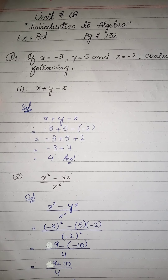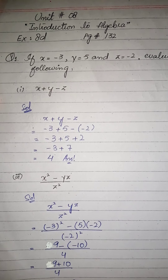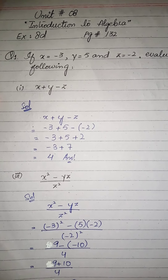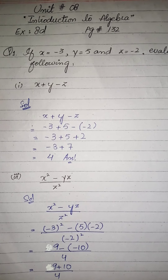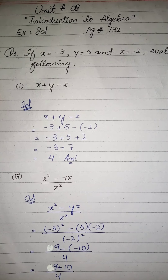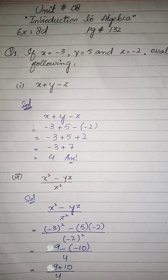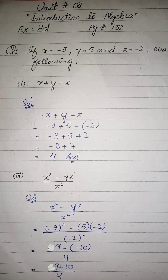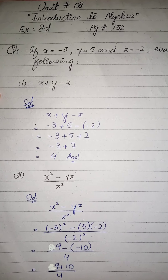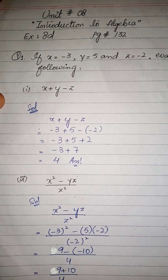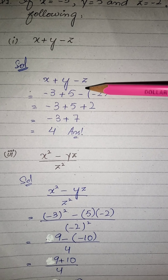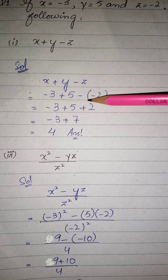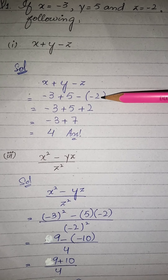پہلا part ہے: x plus y minus z۔ x کی جگہ minus 3 put کریں، y کی جگہ plus 5 put کریں، اور z کی جگہ minus 2 put کریں۔ minus 2 کو bracket میں لکھا کیونکہ اس سے پہلے minus sign تھی۔